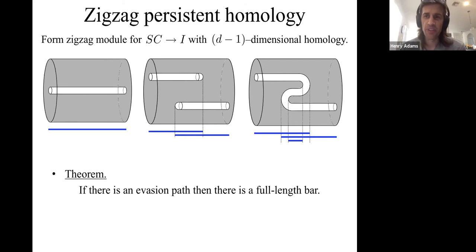The upshot is you can use zigzag persistence to get the following theorem: if there's an evasion path, then there's a full length bar. But unfortunately, this is not an if and only if criterion. I lied to you when I drew these bars in blue on top, which are now crossed out. These are the incorrect bars for this example. The correct bars are actually drawn below. This is what I'm saying about how zigzag persistence is more counterintuitive. This example on the right is one in which there's no evasion path, even though there is a full length bar. So this isn't an if and only if criterion. If there's no full length bar, then there's no evasion path, but you might have a full length bar and still have no evasion path.